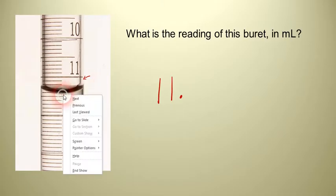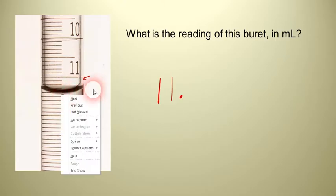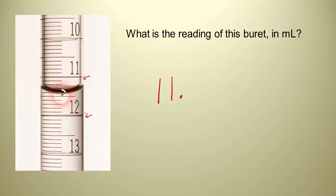So right there at that little shadow. Let me... I can make a mark there. Alright. So anyway, we see that that is in between 11.4 and 11.5. So that means it's 11.4 something.